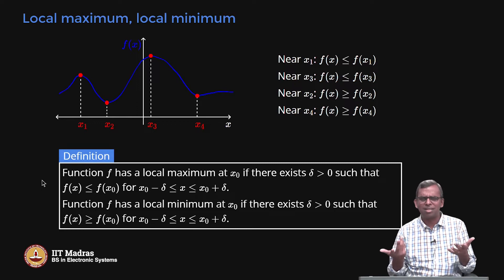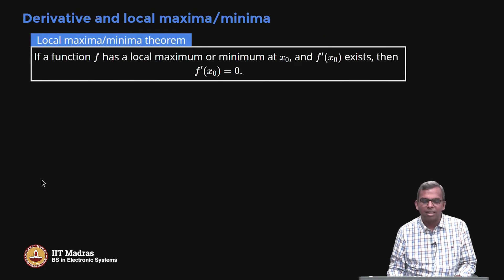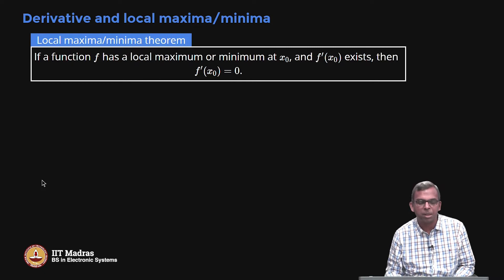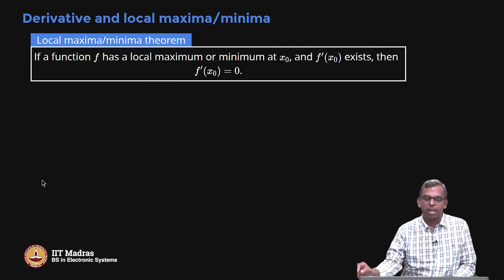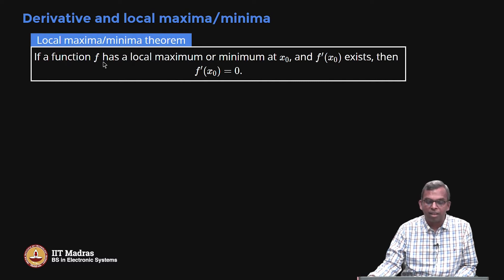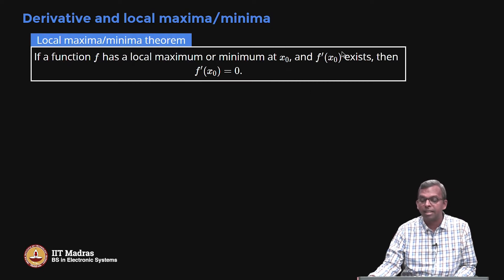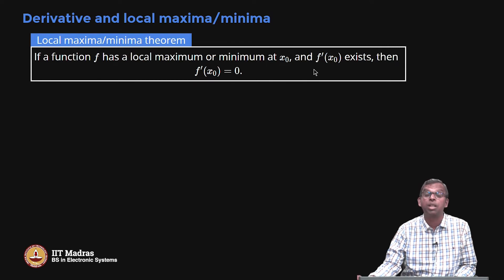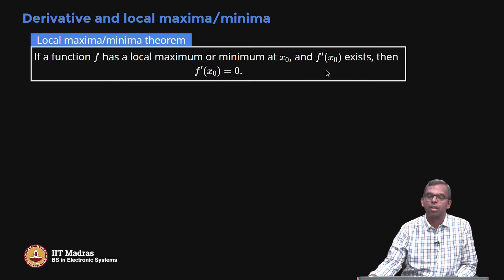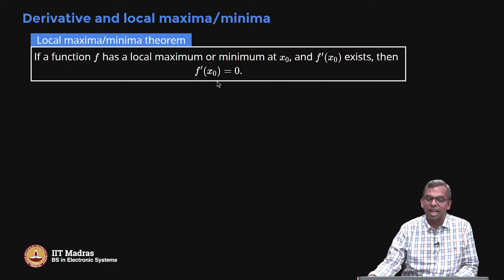This definition is technically correct and intuitive: locally, around x₀ for a small delta interval, you have a highest or lowest value. Now, what is the connection between this and the derivative? There is a wonderful local maxima-minima theorem: if f has a local maximum or minimum at x₀, and the derivative exists at x₀, then f′(x₀) must equal 0. It cannot be anything non-zero.